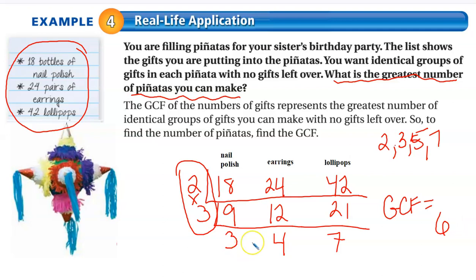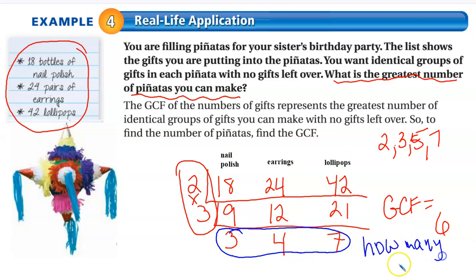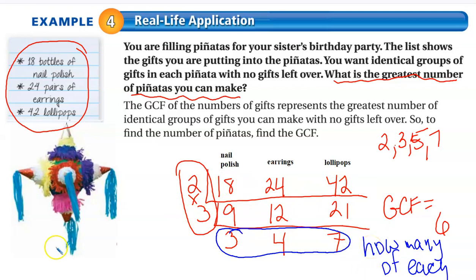Now here's what's really cool. At the bottom of my chart, these aren't the leftovers — this actually tells me how many of each are going to go inside. So I've got three bottles of polish times six is 18, four pairs of earrings times six is 24, and seven lollipops times six is 42. So this actually tells me what each piñata will have: three bottles of nail polish, four pairs of earrings, and seven lollipops in each.